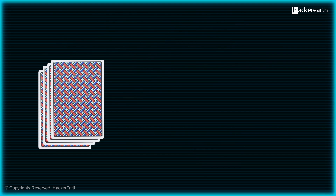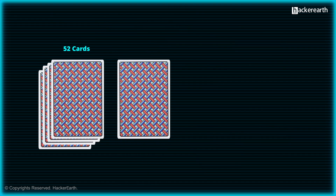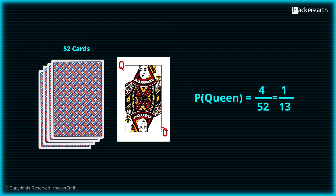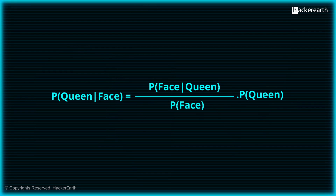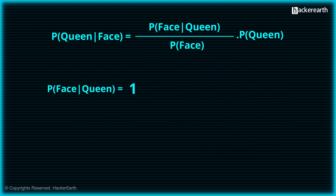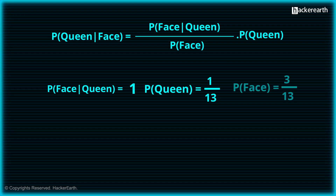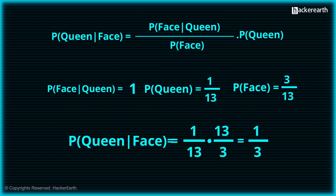Let us take an example to better understand Bayes' theorem. Suppose we draw a single card from a standard deck of 52 cards. The probability that the card is a queen — P(Queen) — is 4/52, which equals 1/13. If we are given evidence that the card is a face card, the posterior probability P(Queen|Face) can be calculated using Bayes' theorem as: P(Face|Queen) × P(Queen) / P(Face). P(Face|Queen) equals 1, since every queen is a face card. P(Face) equals 3/13, as there are 3 face cards per suit.